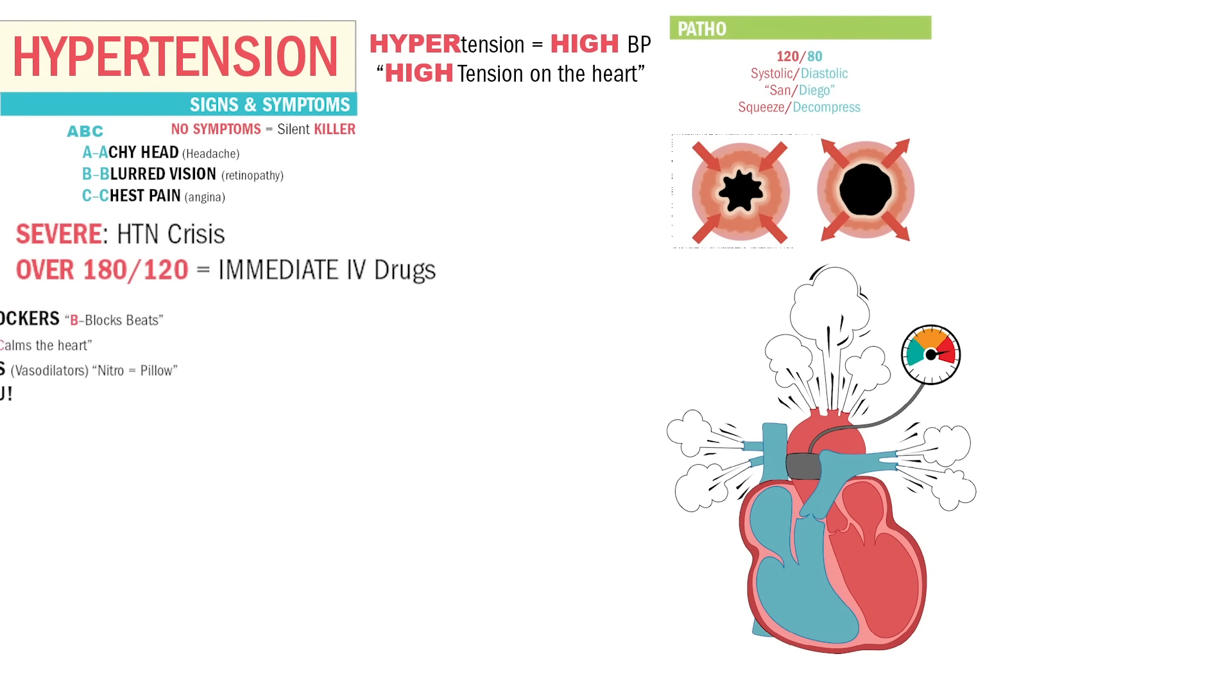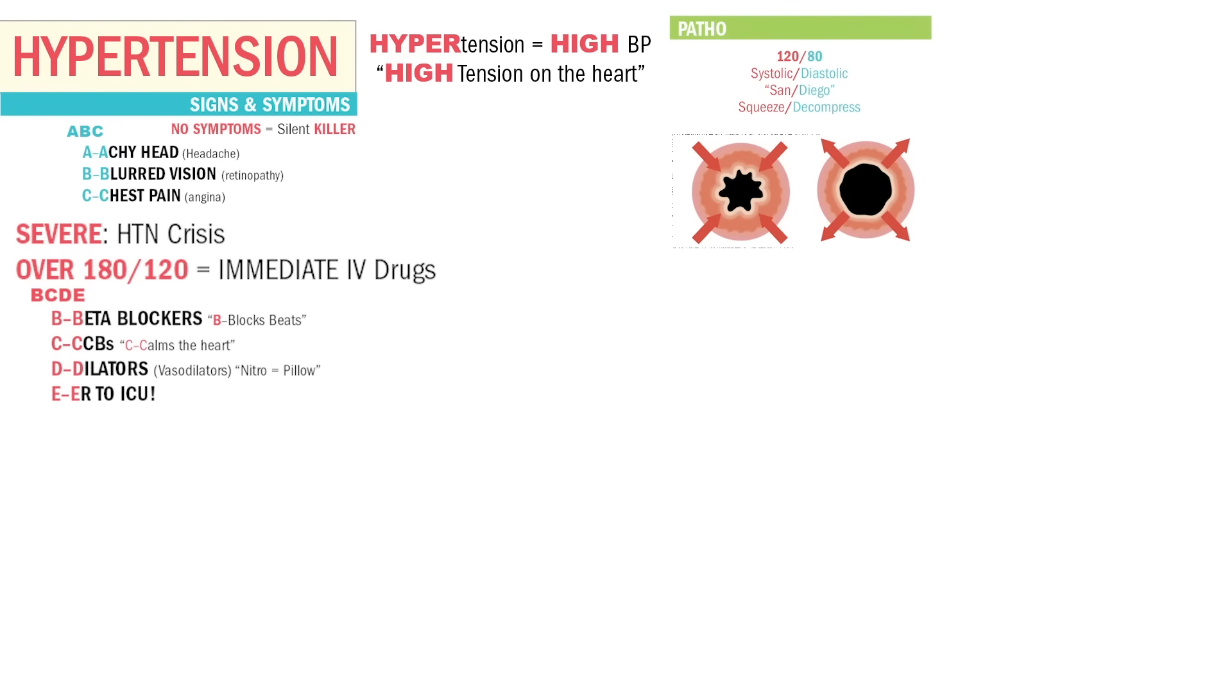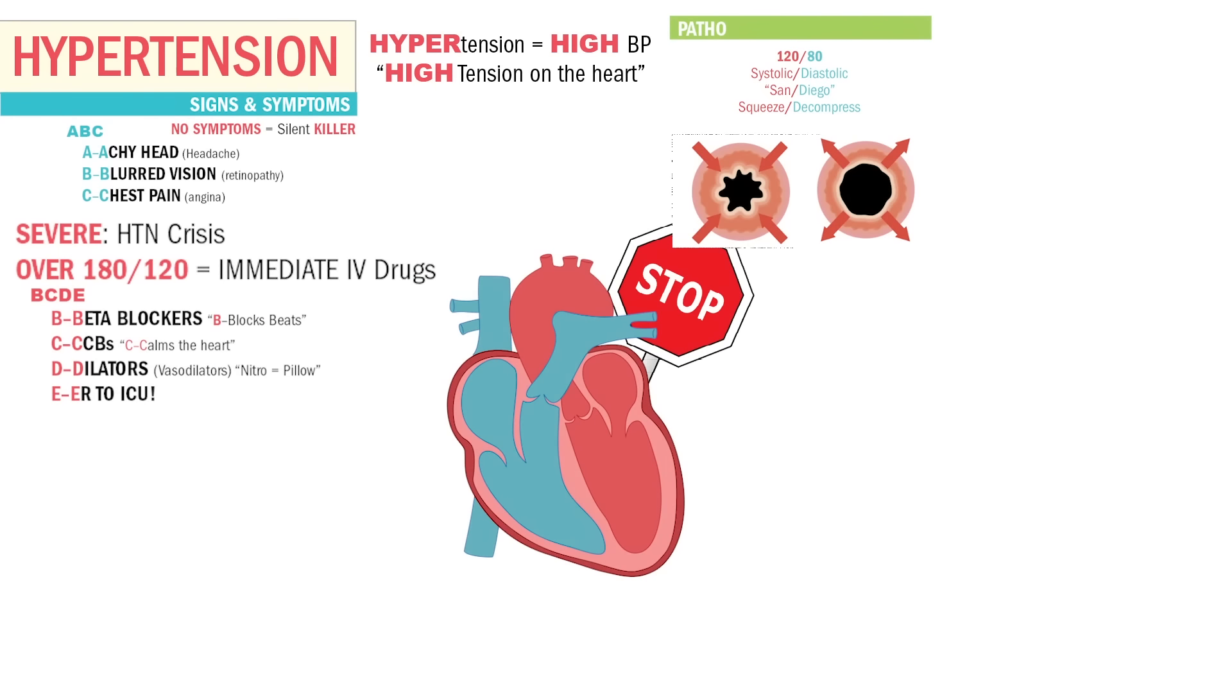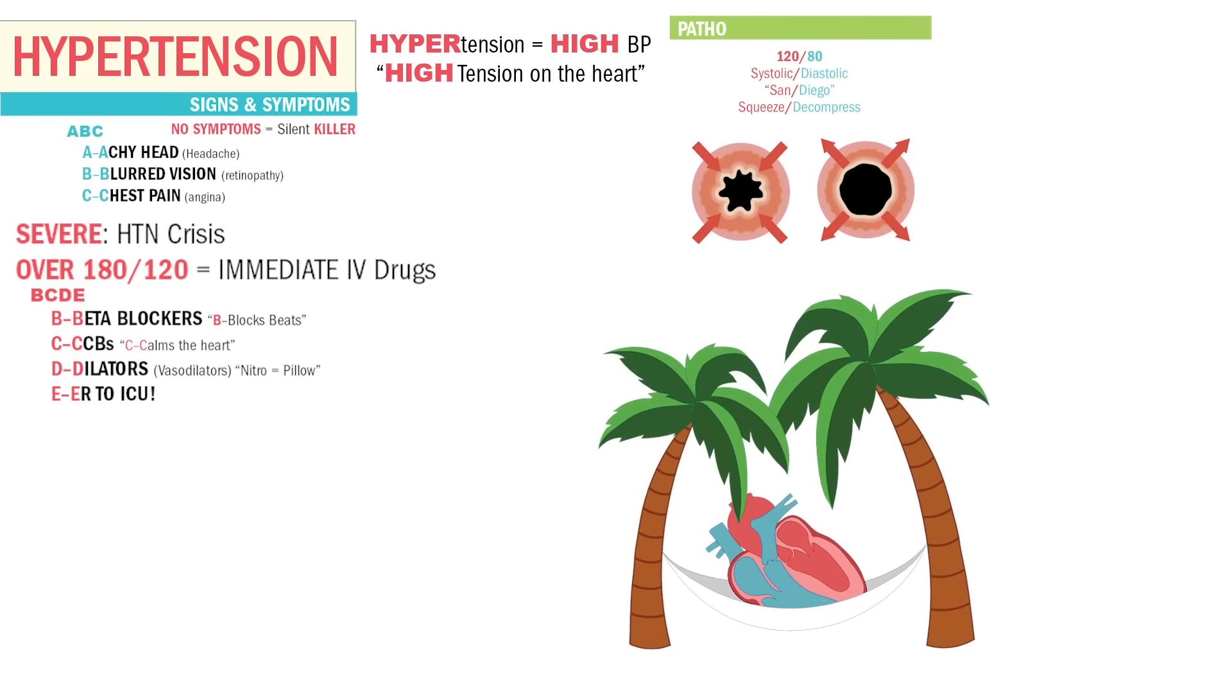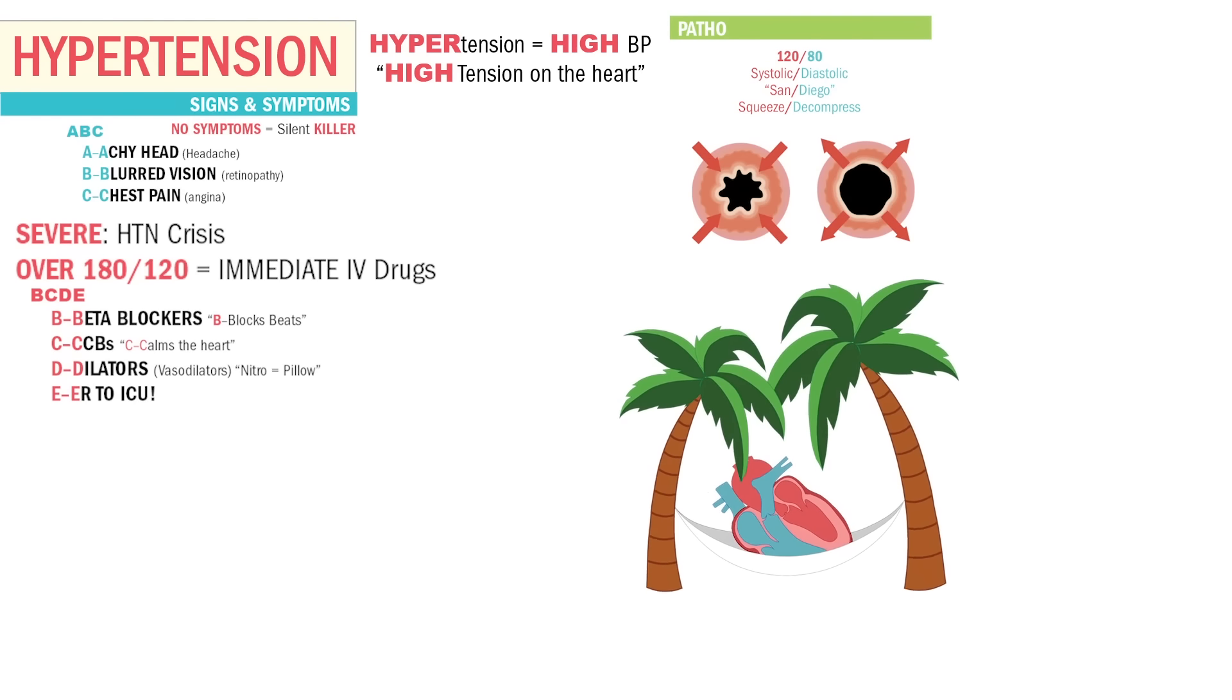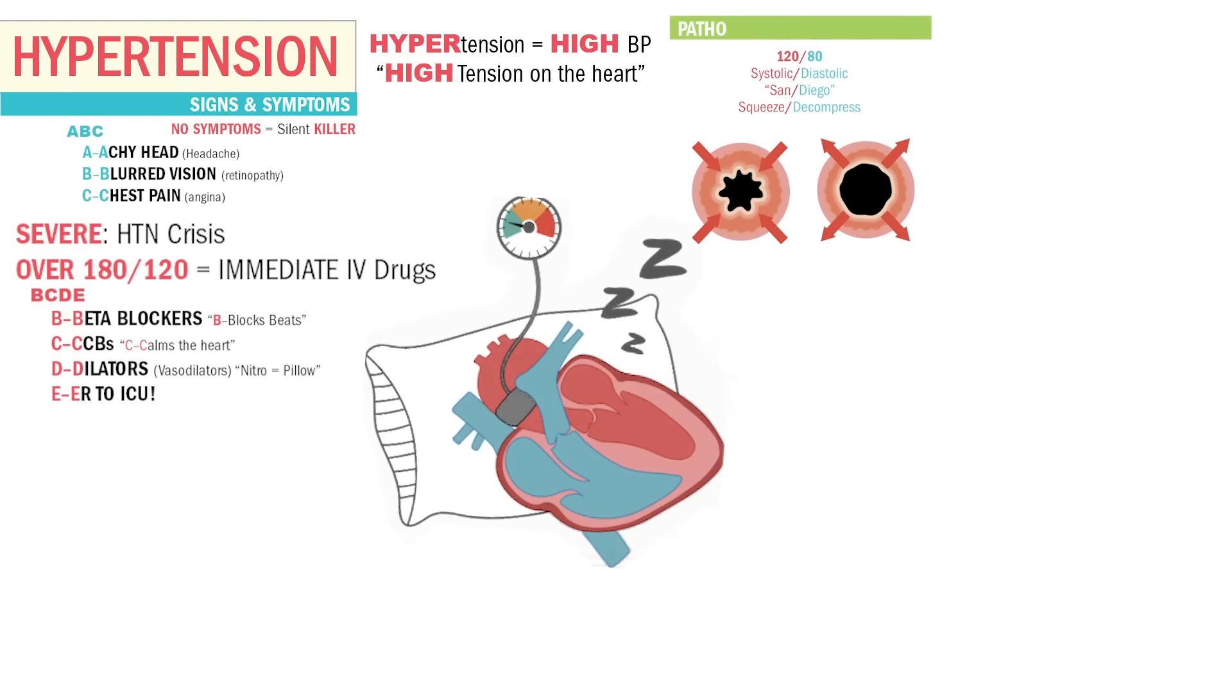So we give IV drugs immediately. Remember B, C, D, and E. B for beta blockers that put the brakes on the heart, slowing it down. C is for calcium channel blockers. Calcium calms the heart and controls blood pressure. D for dilators, like vasodilators. D for decreases blood pressure. Nitro acts like a pillow for the heart, rest and relaxation. And lastly, E is for ER to ICU, since it's a crisis situation.